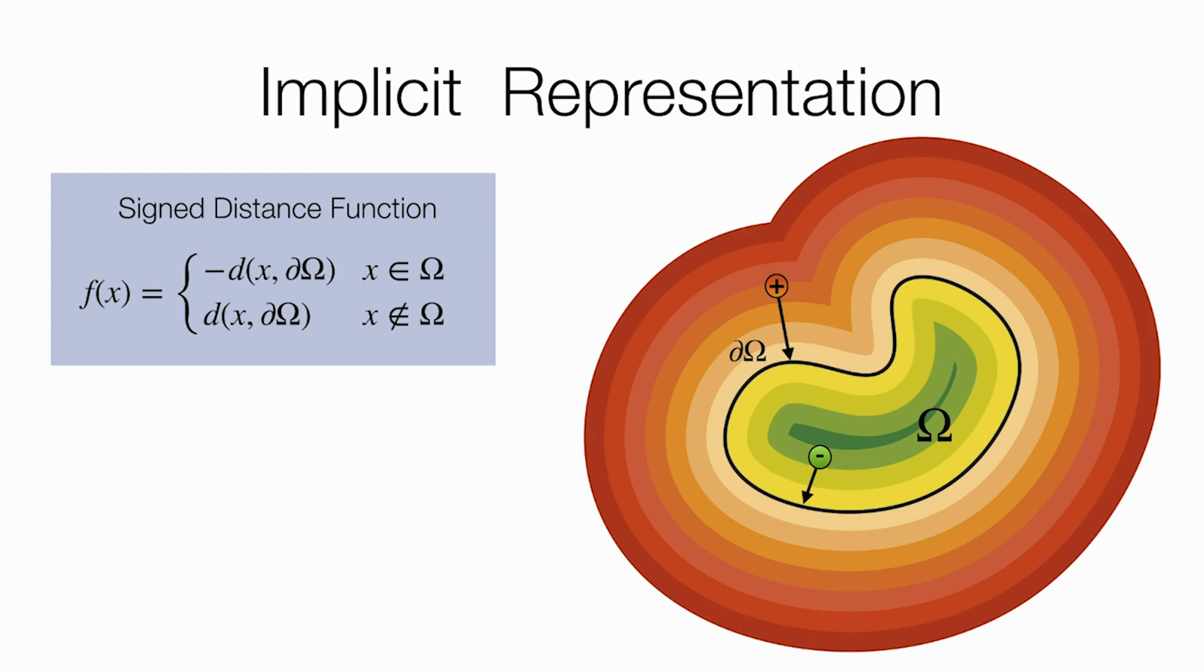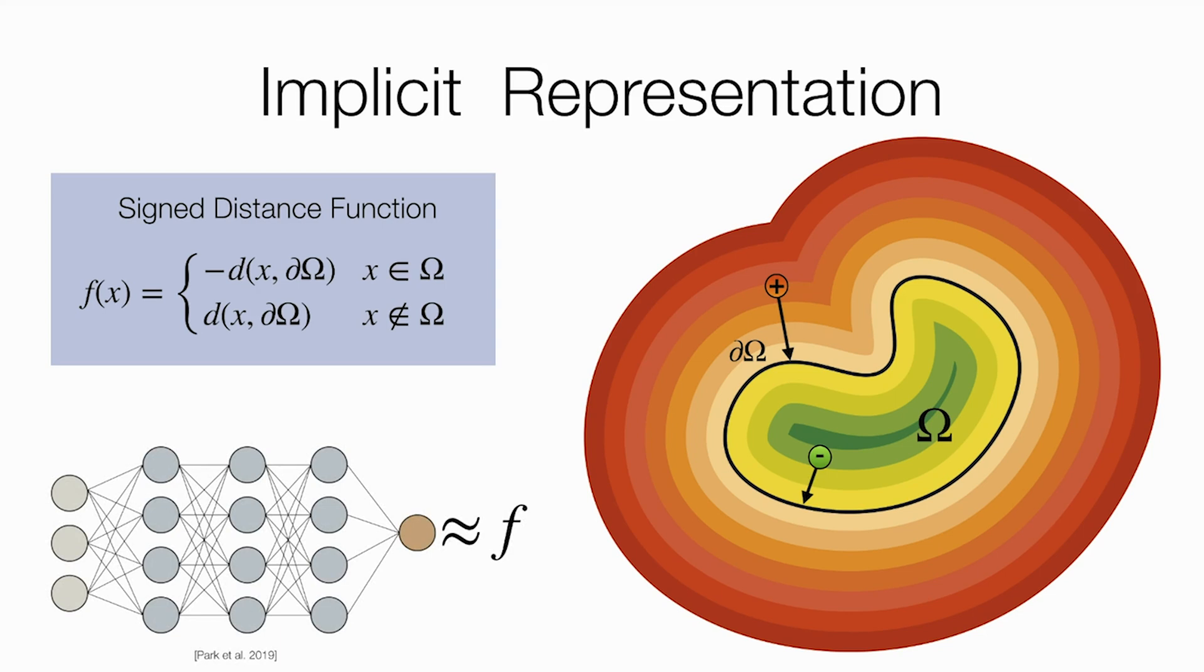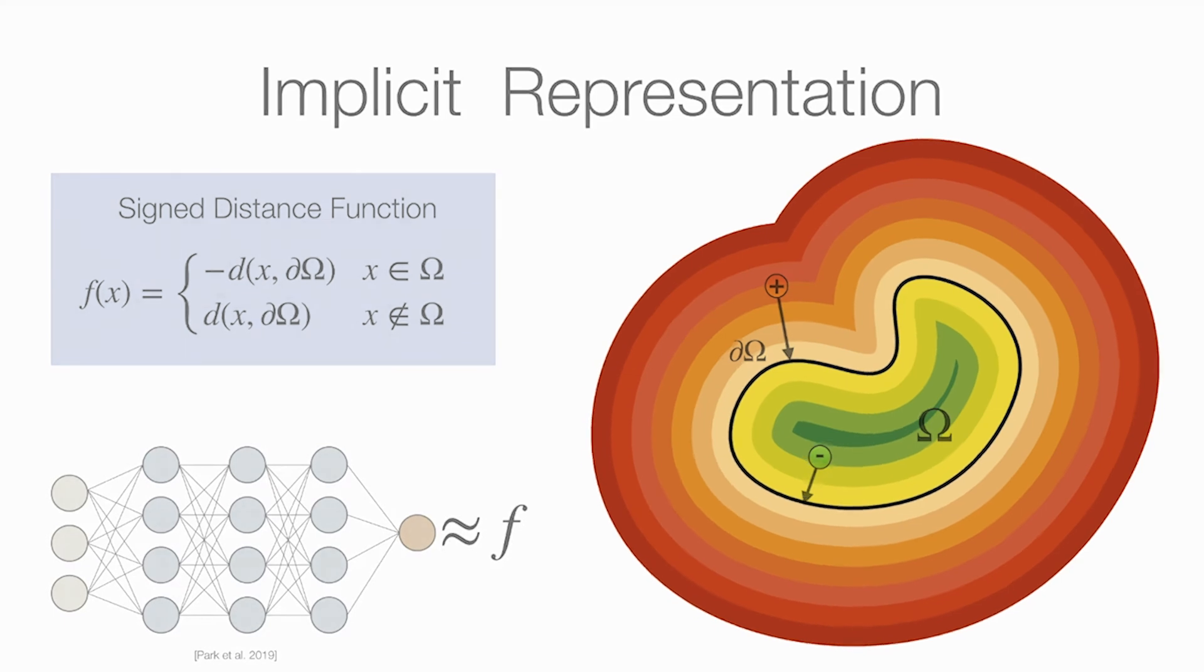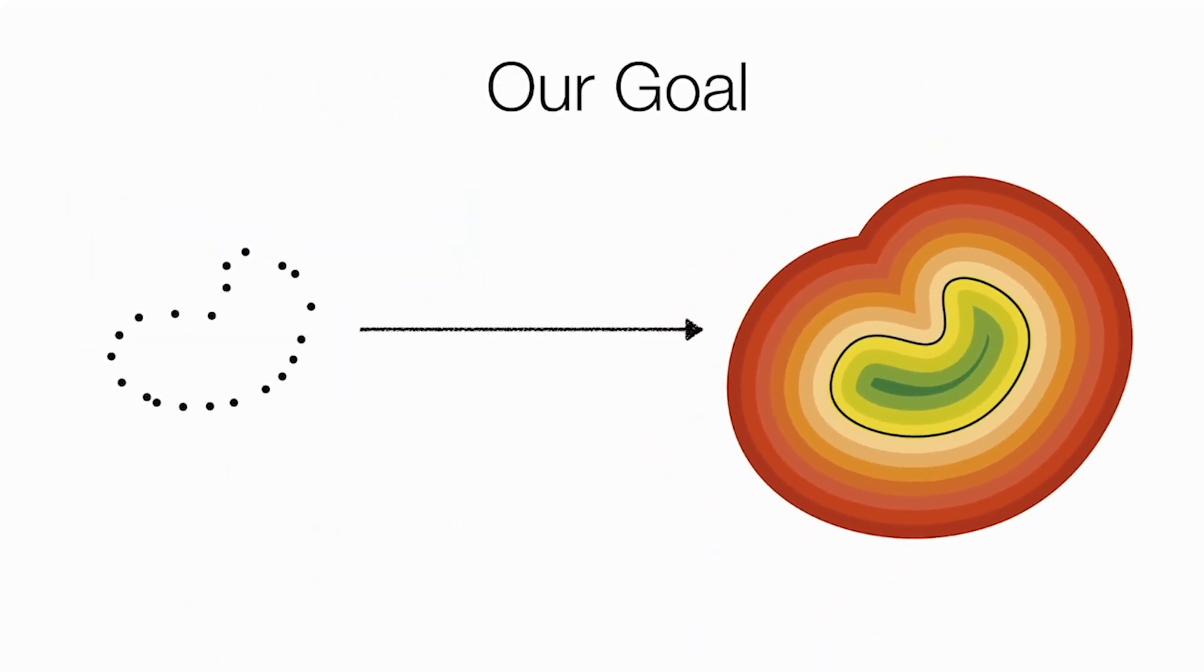One recent approach for 3D shape learning is to train a neural network to approximate a sign-distance function. Our goal is to learn a neural sign-distance function from raw point clouds.